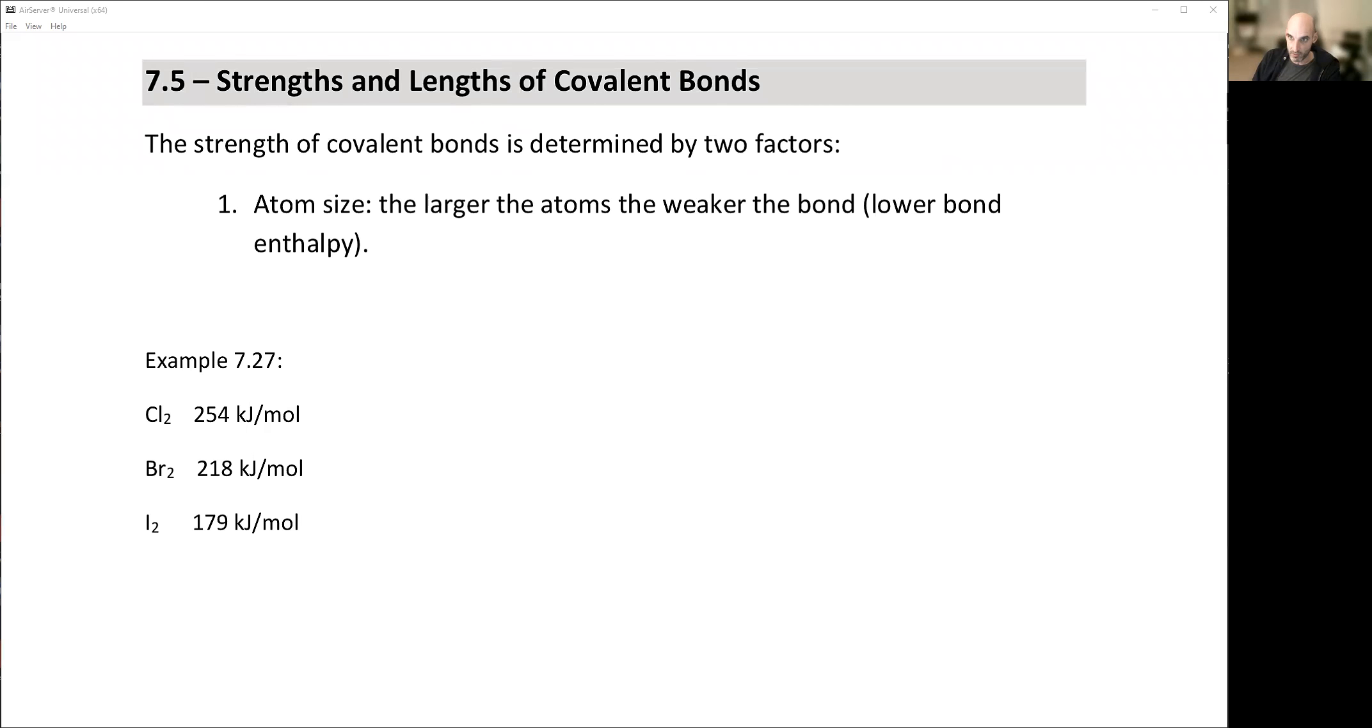Okay, 7.5. Strengths and lengths of covalent bonds. So we've looked at creating all of these covalent bonds. It's important to understand the relationship between strength and length. The strength of a covalent bond is determined by two factors.